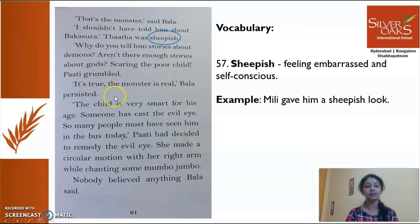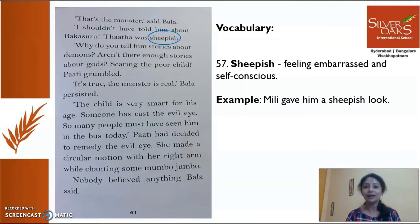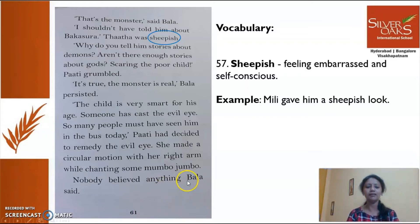'Grumbled' is a kind of complaint — she was almost angry with Tata, asking why not tell stories about gods instead of scaring Bala with demon stories. 'It's true, the monster is real,' Bala persisted. 'The child is very smart for his age. Someone has cast the evil eye — so many people must have seen him in the bus today.' Patty decided to remedy the evil eye. She made a circular motion with her right arm while chanting some mambo jumbo.